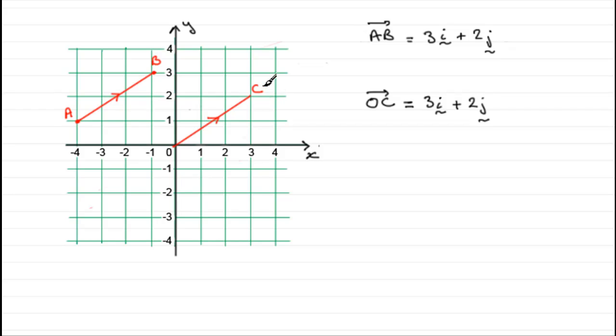And notice that the coordinates of C are going to be exactly the same numerical values that we have in the vector: 3, 2. So it'll have coordinates (3, 2). Unlike our coordinates here for A and B, remember, they're going to keep changing because that vector is a displacement vector. But when we have a position vector, it always starts from the origin.